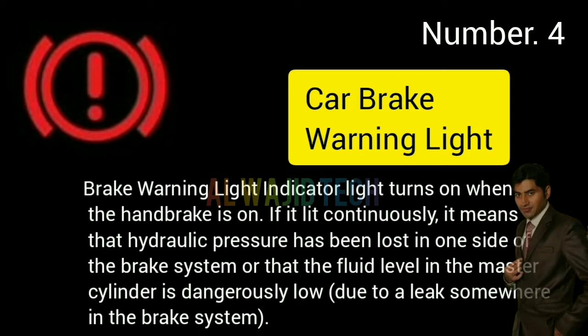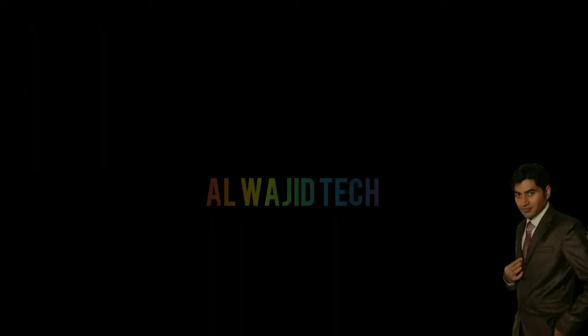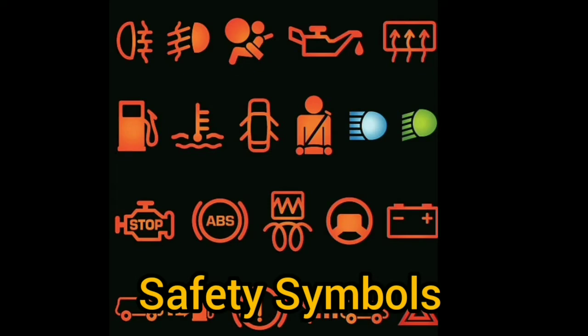Number four: Car brake warning light. The brake warning light indicator turns on when the handbrake is on. If it remains on continuously, it means that hydraulic pressure has been lost in one side of the brake system, or that the fluid level in the master cylinder is dangerously low.